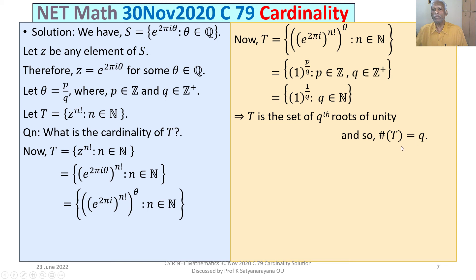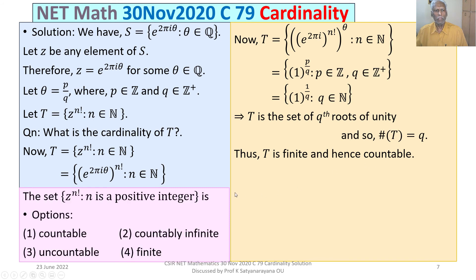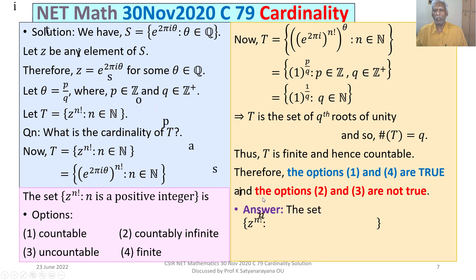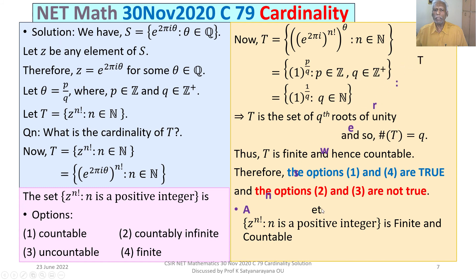Since the cardinality of T is q, T is finite, and hence countable. Looking at our options, option 4 is 'finite' and option 1 is 'countable.' Since T is finite, it is also countable, so options 1 and 4 are true. Since T is finite, it is not countably infinite and not uncountable, so options 2 and 3 are not true. Therefore, for each z ∈ S, the set {z^(n!) : n ∈ ℕ} is finite and countable.